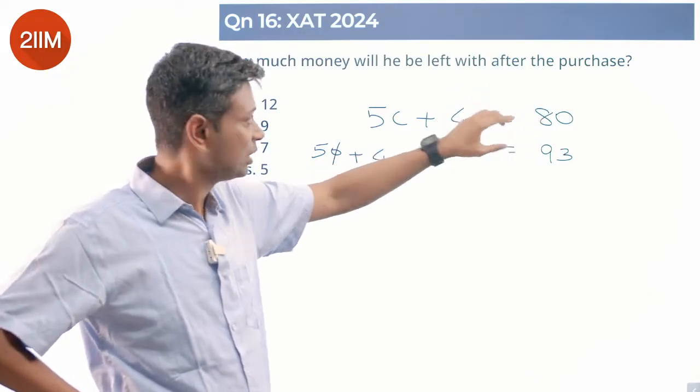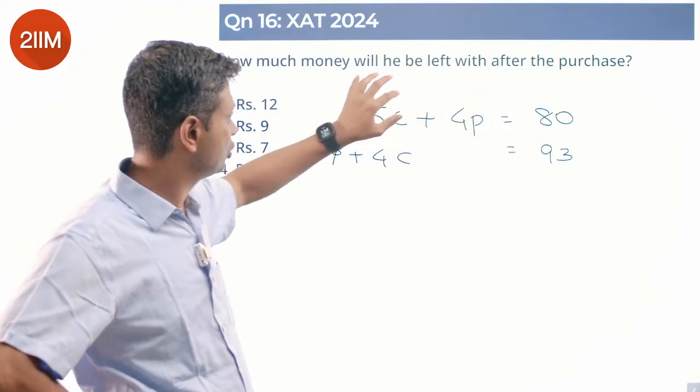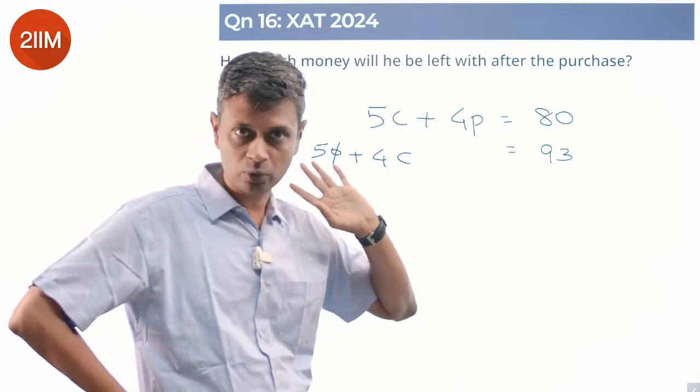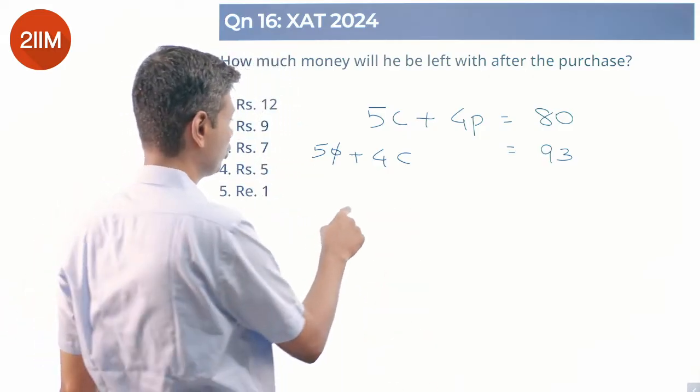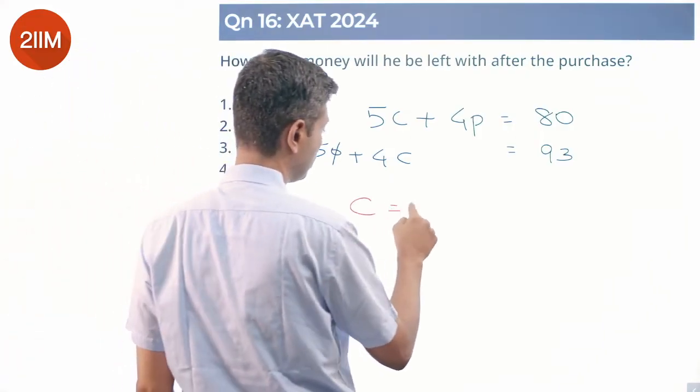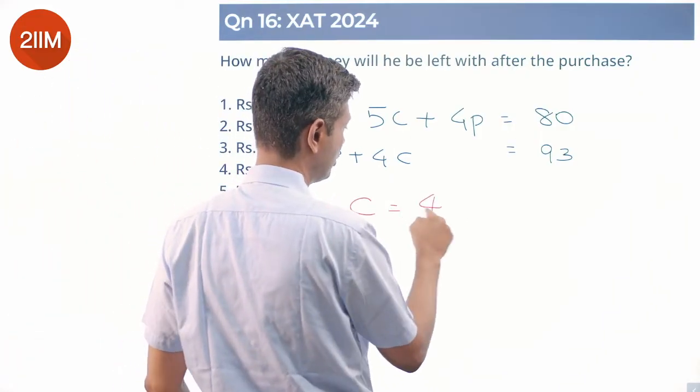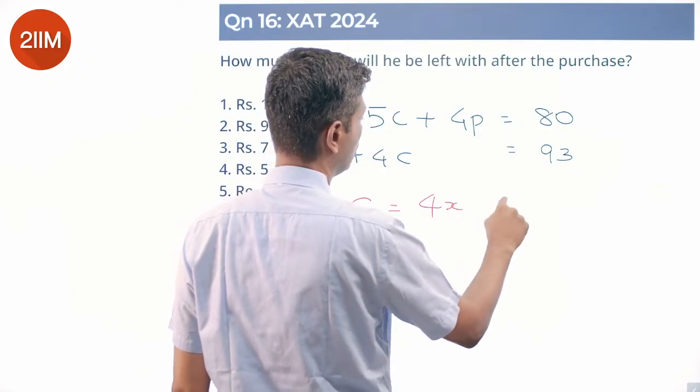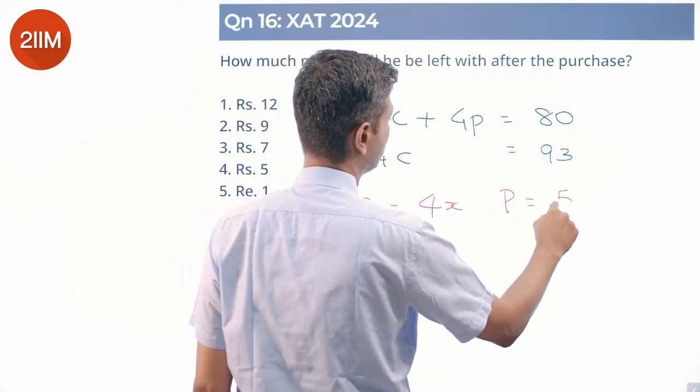This number is a multiple of 5, should be a multiple of 5 because the total is a multiple of 5. This number is a multiple of 4, this should be a multiple of 4 for the total to be a multiple of 4. So we know that C is a multiple of 4, and P is a multiple of 5.